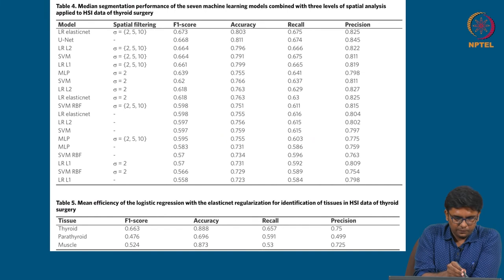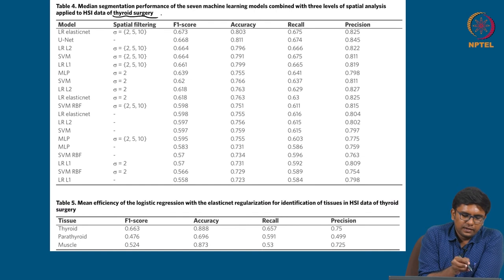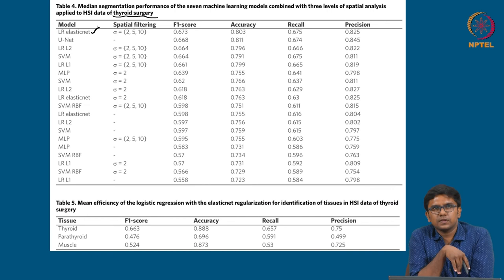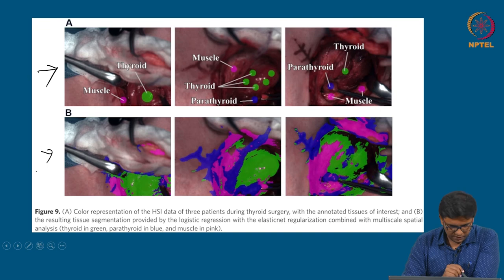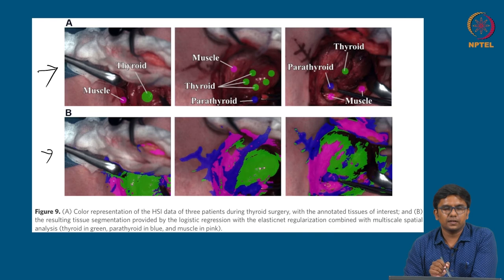For the thyroid surgery data, the LRL elastic net algorithm scores much higher over all other algorithms. In the HSI series A for thyroid surgery, series B shows how tissue segmentation occurs: the thyroid gland is shown in green, and the regions where the parathyroid glands lie are shown in blue.